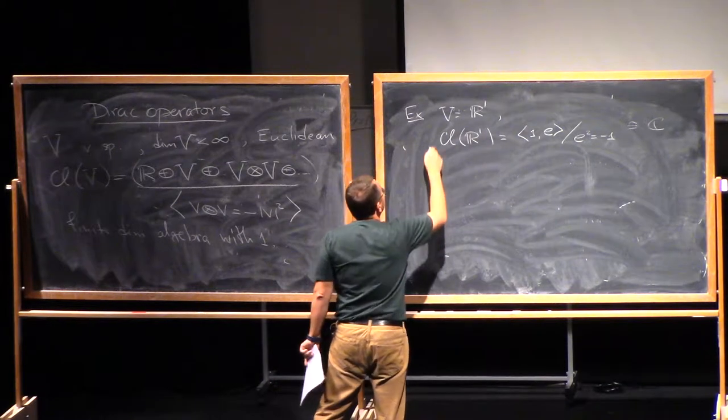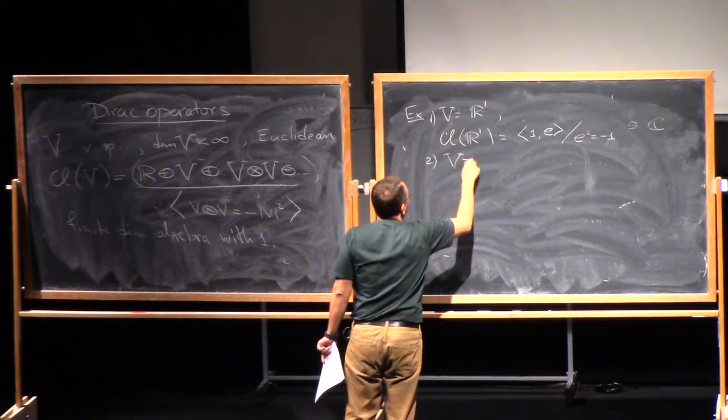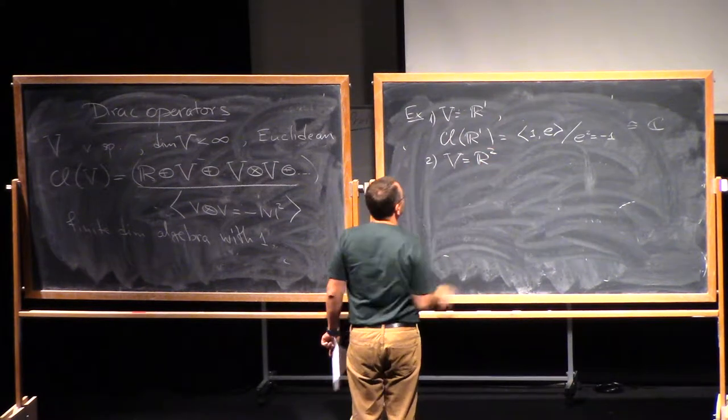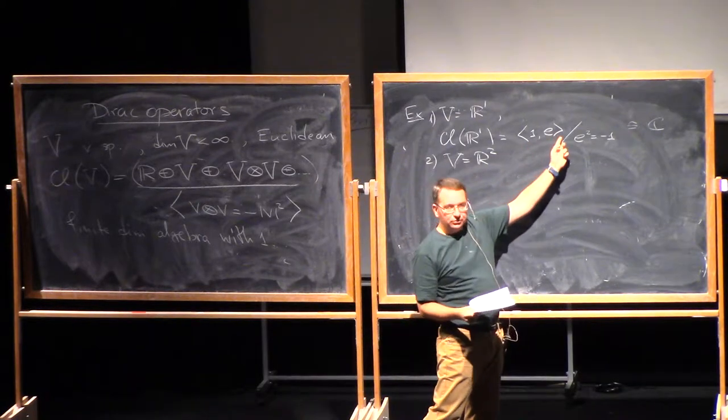Okay, so maybe one more example. If you take V to be R2, now you will have three generators, right? One, E1, and E2.